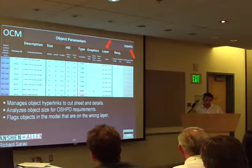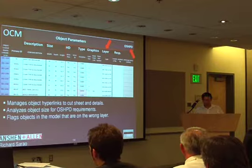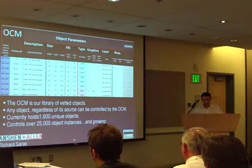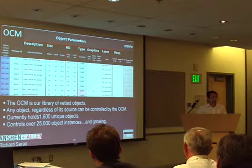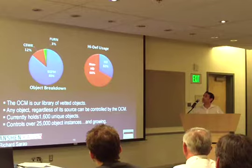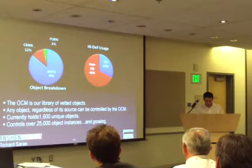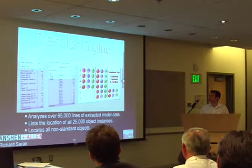What this allowed us to do is create a library of vetted objects. Because it's a spreadsheet-based system, we can infuse it with intelligence. For example, if somebody puts an object on the wrong layer, that object will highlight in red. And because of the spreadsheet, we can look at that information in a hundred different ways, like these pie charts. We have all manner of ways of looking at information, and that's really the third part of the results engine.